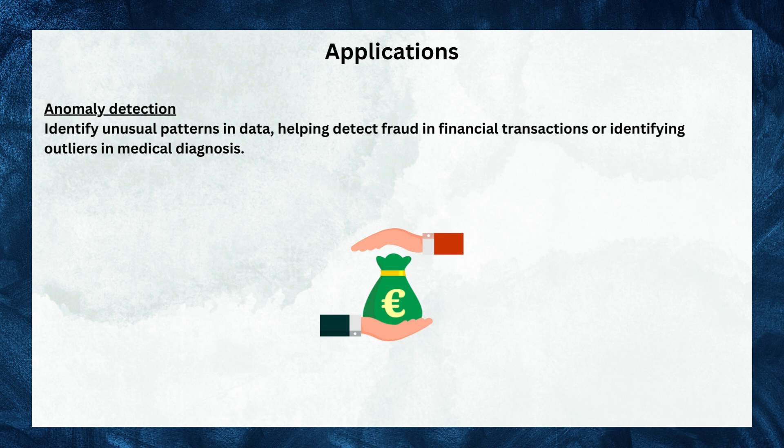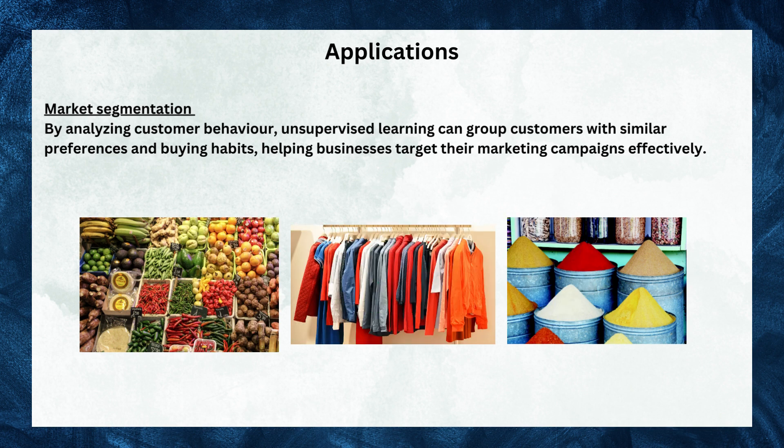Anomaly detection: Unsupervised learning detects extraordinary patterns in data. It plays a crucial role in identifying fraud in financial transactions and pinpointing outliers in medical diagnosis. By analyzing data without predetermined labels, it uncovers hidden anomalies that might otherwise go unnoticed. Market segmentation: By grouping customers with similar preferences and buying habits, it helps businesses refine their marketing strategy and deliver targeted campaigns, like the market basket analysis we saw earlier.